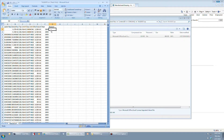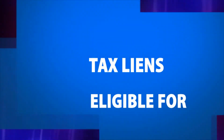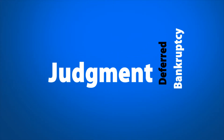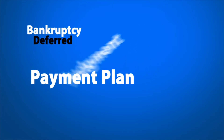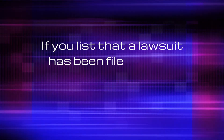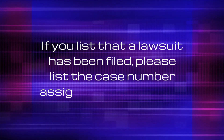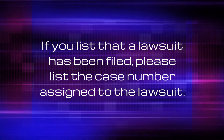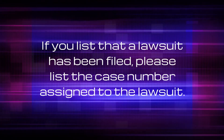At this time, you should modify the spreadsheet by adding the appropriate reason under the Reason column. The liens that are eligible for preservation are: bankruptcy, deferred for persons over 65, a judgment, payment plan, and a suit filed. Please note that if you list that a lawsuit has been filed, you need to list the case number assigned to the lawsuit.